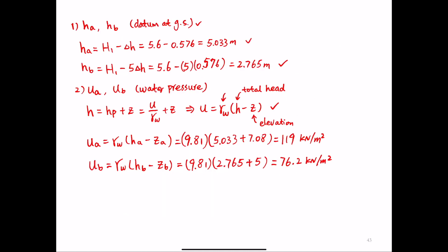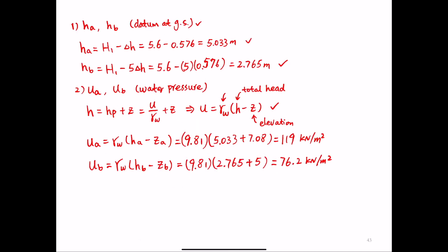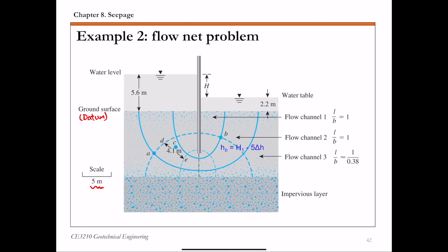To calculate the seepage quantity q, depending on the flow net, I have listed two scenarios. The first one is this example here, where the flow net has rectangular elements. Rectangular elements means the ratio of the length l to the width b of the flow element is not equal to one.